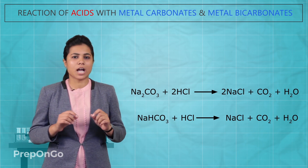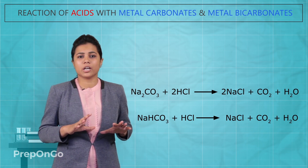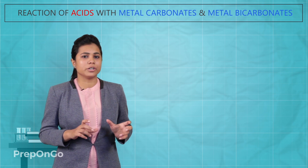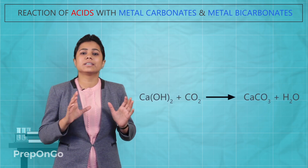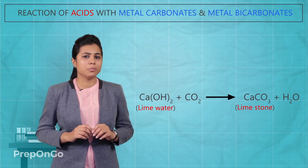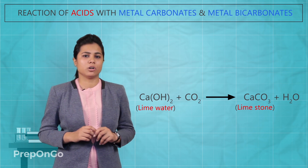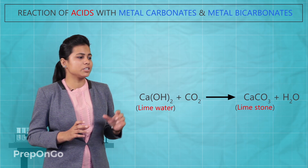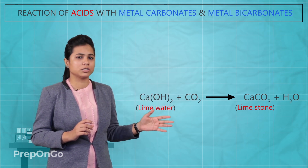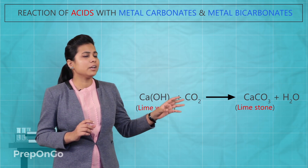In both the cases, carbon dioxide is evolved. This carbon dioxide turns the lime water milky. This lime water, which is calcium hydroxide, gets converted into calcium carbonate due to the reaction with carbon dioxide. Calcium hydroxide reacts with carbon dioxide to form calcium carbonate and water.